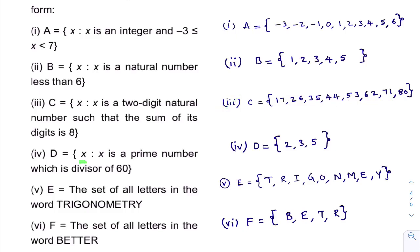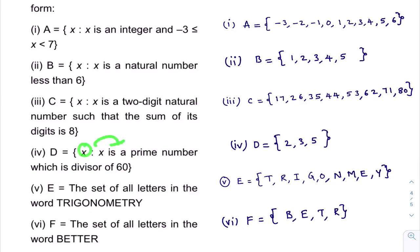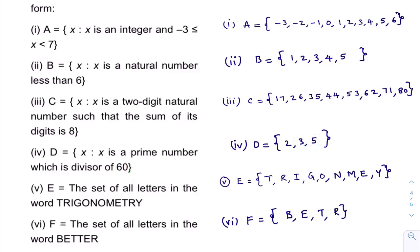Next: x such that x is a prime number and which is a divisor of 60. Is 2 prime? Yes. Does 2 divide 60? Yes. Is 3 prime? Yes. Does 3 divide 60? Yes. Is 5 prime? Yes. Does 5 divide 60? Yes. So the prime numbers which are divisors of 60 are 2, 3, and 5.